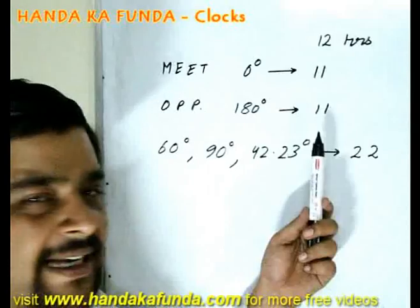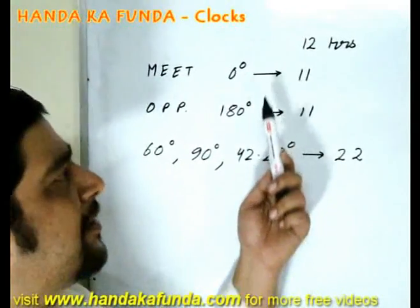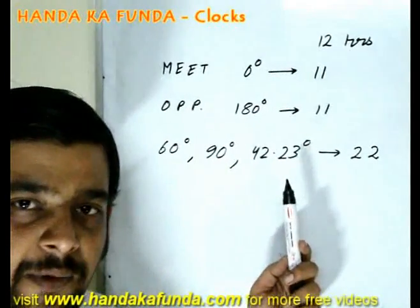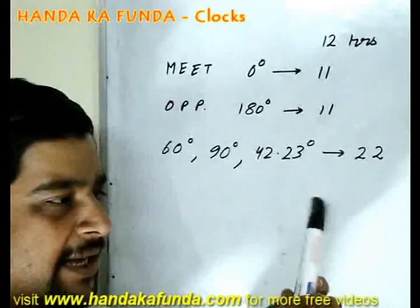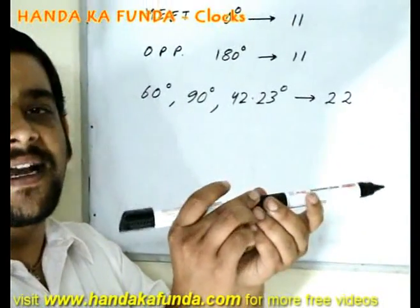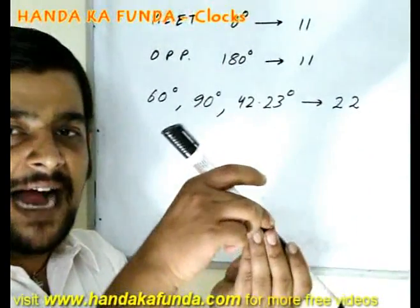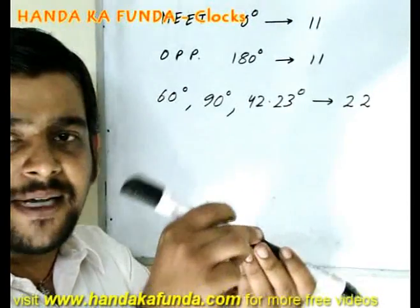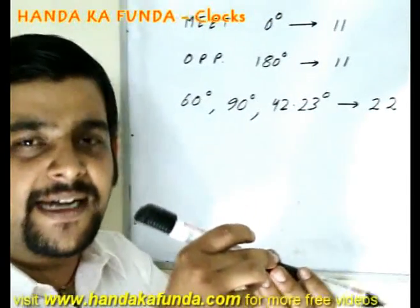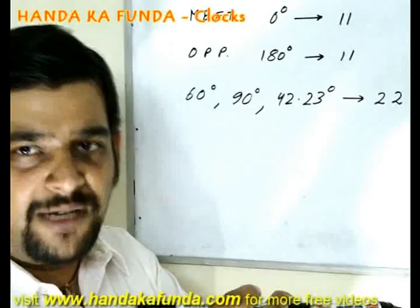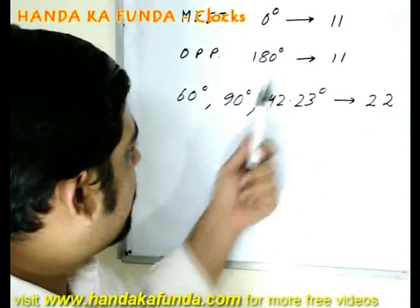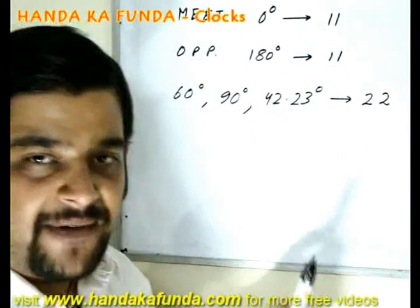What about 180 degrees — opposite hands? That case is exactly the same as 0 degrees, because there is only one overtake. There is only one 180-degree position between any set of hours. From 5 to 6 there will be one 180-degree occurrence, and between 4 to 5 there will also be only one. So that will also be 11 times.